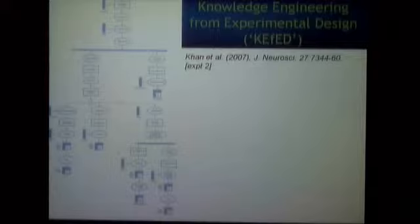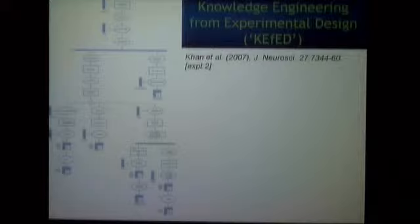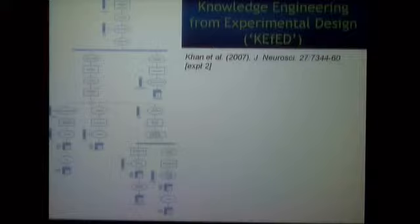So what is it? How does this model work? I call it Knowledge Engineering from Experimental Design, and the acronym is KFED. The basis of it is that these little square blocks are the dependent variables — the measurements you make in an experiment — and these things are the parameters you have in the experiment.